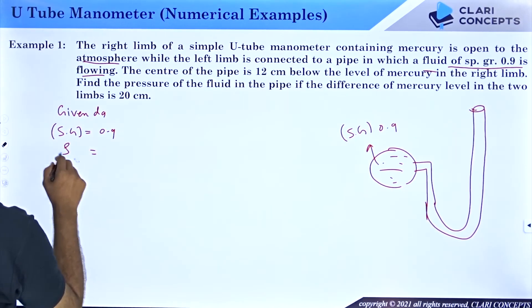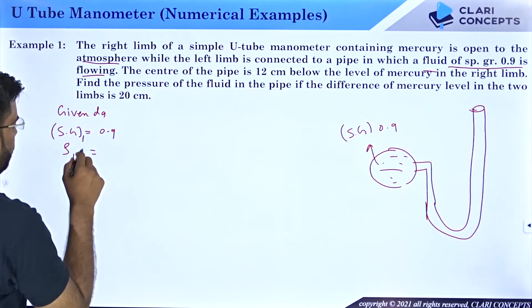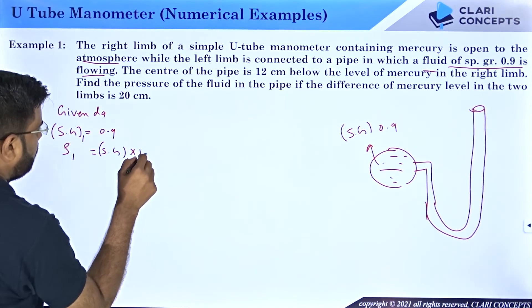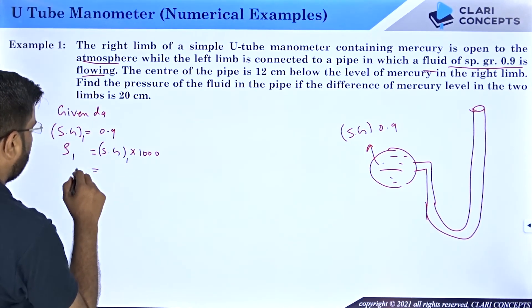Let me just write rho 1, rho 1 as the main fluid. Specific gravity 1, rho 1, and if you remember, the specific gravity into 1000 will give you the density of the fluid rho 1.